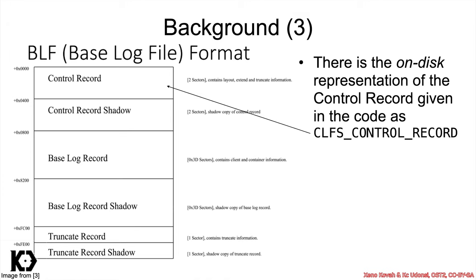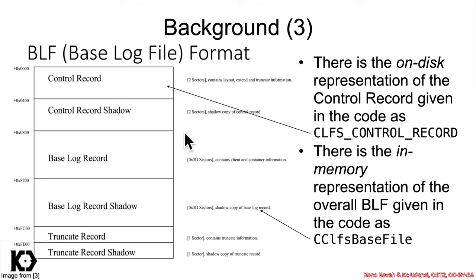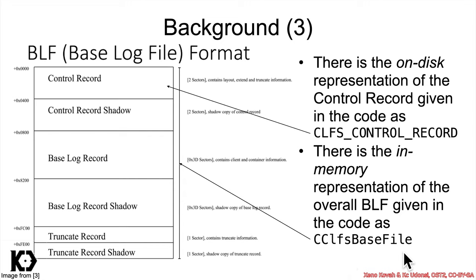Specifically, there is the on-disk representation of the control record, and that will be the thing called clfs_control_record in the code you're going to be looking at. So when you see that struct, think of it as this record that started out as a chunk of the file. There is also an in-memory representation where it pulls in and copies data fields from disk, and it stores that in-memory representation in the cclfs_base_file data structure. Keep in mind that is the in-memory representation — it will have been copied from the on-disk representation.